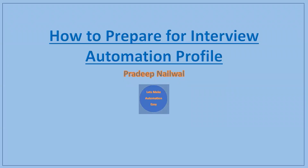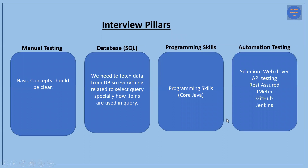Today I'm going to discuss how to prepare for the interview for the automation profile. Basically, your interview depends on four pillars. The four main things required are: first pillar is manual testing, second pillar is the database part, third pillar is programming skills, and the fourth one is automation testing.